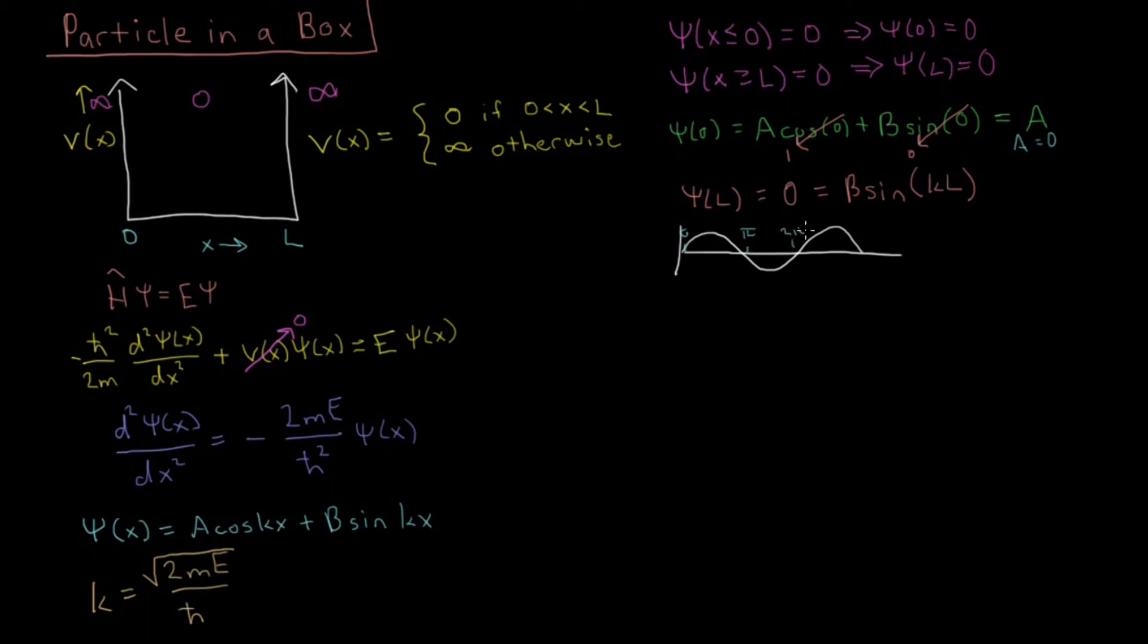2pi, etc. So it really equals 0 at some integer multiple of pi. So we know that this up here is also going to equal B times sine n pi.